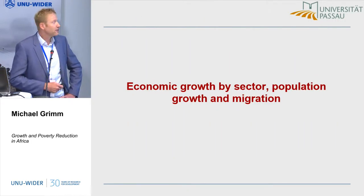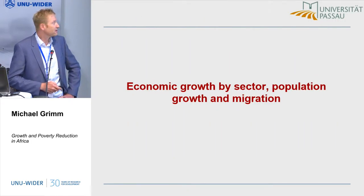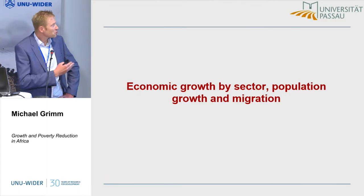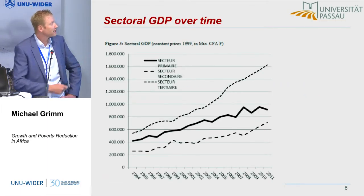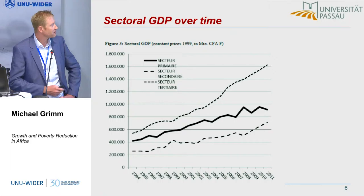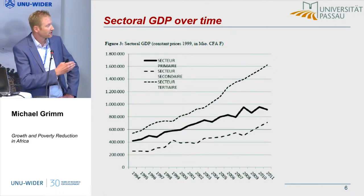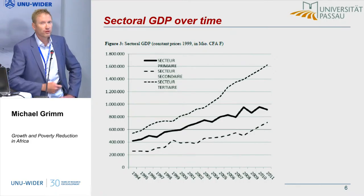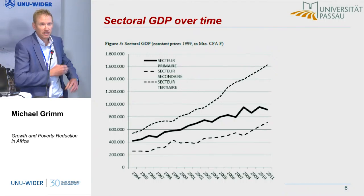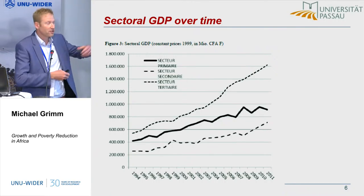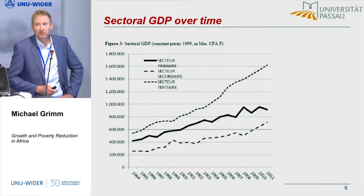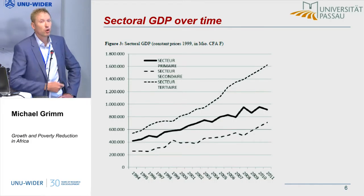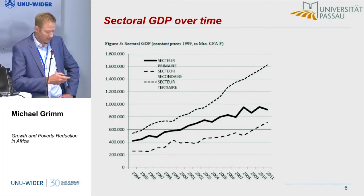Here you see GDP growth by sector — aggregate numbers for the primary, secondary, and tertiary sectors. All these sectors have experienced aggregate growth, as you saw in the GDP figure. But what we are interested in is how it looks in per capita terms.